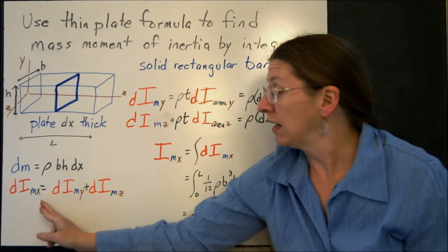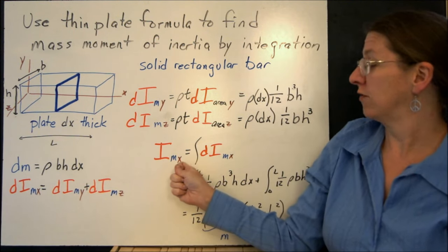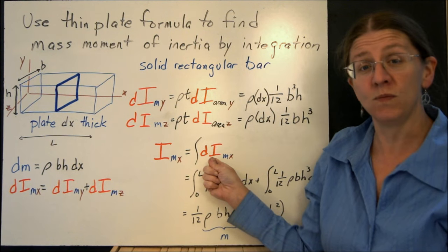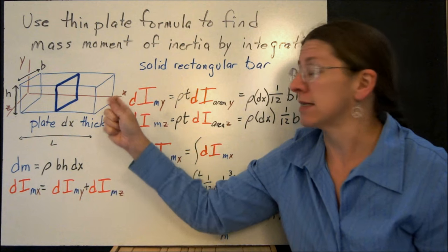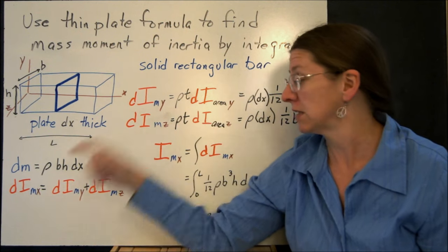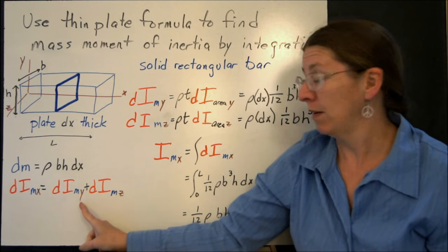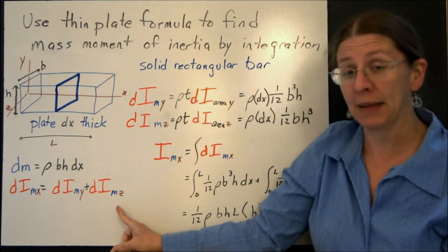Well, remember that I can find the integral of I_m by integrating the dI_m. So my dI_m about this x-axis, which is the one out the length of this, would be dI_m about the y-axis plus dI_m about the z-axis.